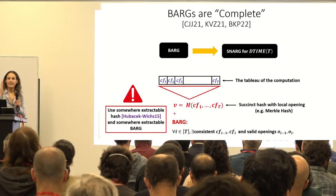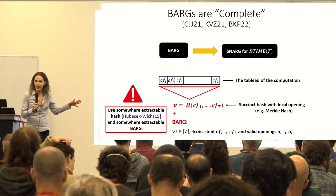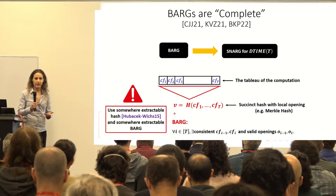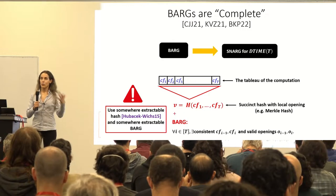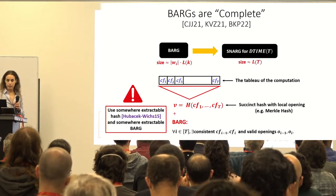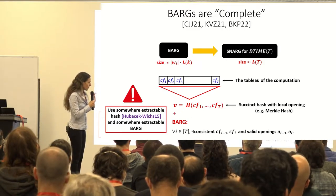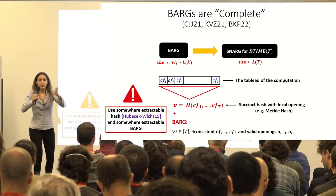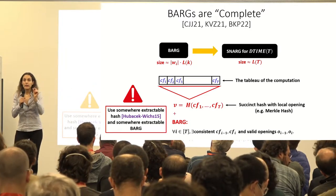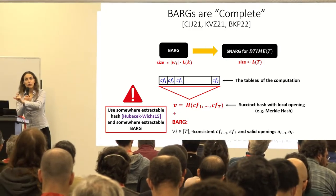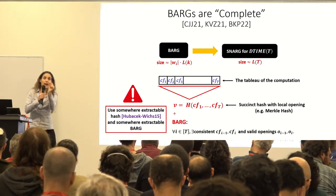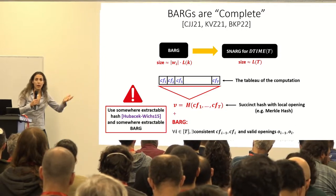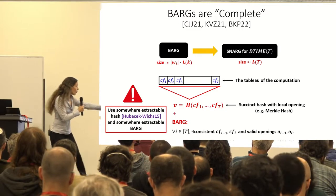BARGs are the new key primitive — we understand that BARGs imply everything. All the SNARGs we knew before under any complexity assumptions follow from BARGs. Now all we need is to construct them. We had a beautiful result from 2021 by Choudhuri, Jain, and Jin: BARGs from Learning with Errors, our favorite post-quantum assumption, with the best possible succinctness. There was also an earlier construction with size √K under quadratic residues and DDH.